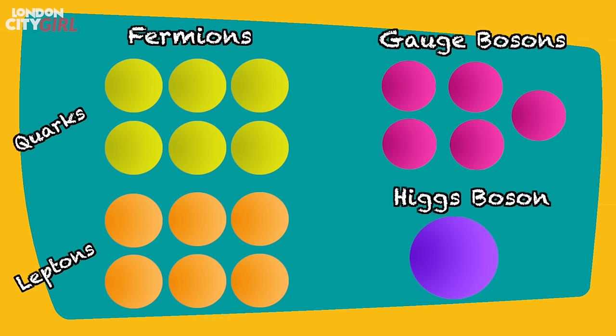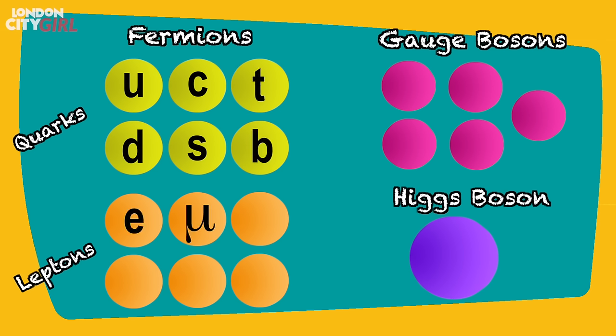How gravity works in the quantum realm is actually not very well understood. We have the matter particles or fermions, which are divided into quarks and leptons. There are six quarks: up, down, charm, strange, top and bottom. There are six leptons: electron, muon, tau, electron neutrino, muon neutrino and tau neutrino. We then have the force carrier particles, otherwise known as gauge bosons.